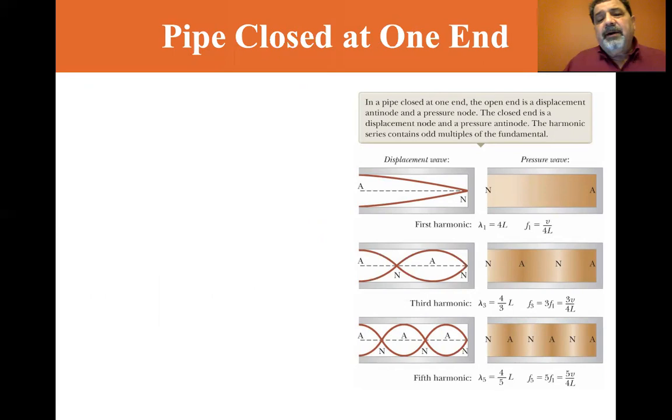So there's going to be a node. They're free to move at the open end, so here you're going to have an antinode at the end but a node at the closed end. In the pipe closed at one end, the open end is a displacement antinode and a pressure node. The closed end is a displacement node and a pressure antinode.